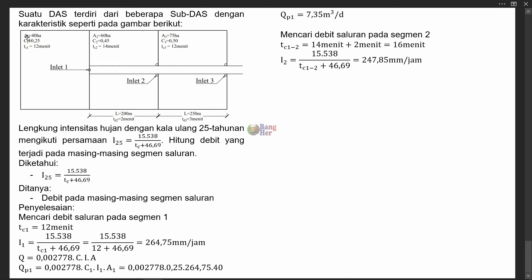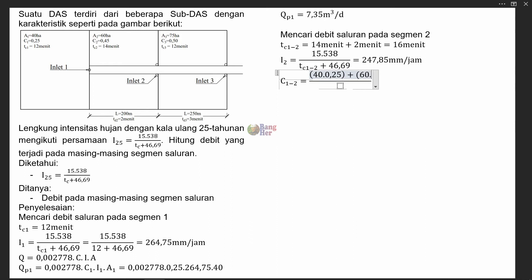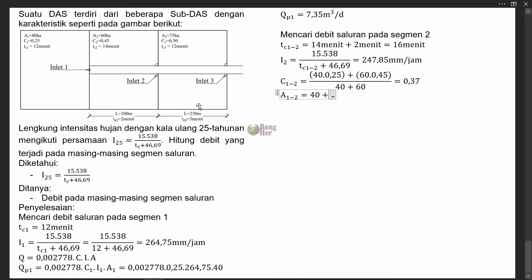Selanjutnya kita mencari koefisien limpasan atau C untuk segmen 2. Karena merupakan gabungan dari segmen 1 dan segmen 2, koefisien limpasan dihitung sebagai: C(1,2) = (A1×C1 + A2×C2) / (A1 + A2). Kalau dihitung, kita memperoleh C sebesar 0,37. Sedangkan luas areanya dijumlahkan: A1 = 40 hektare, A2 = 60 hektare, total menjadi 100 hektare.